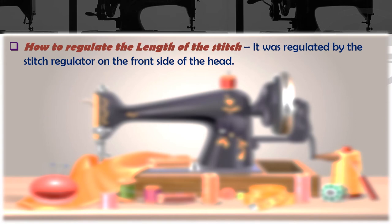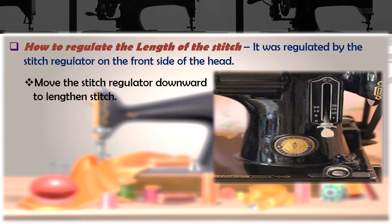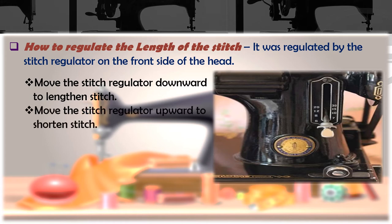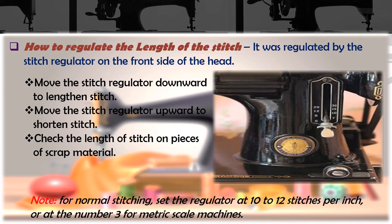How to regulate the length of the stitch: it is regulated by the stitch regulator on the front side of the head. Move the stitch regulator downward to lengthen the stitch, and upward to shorten the stitch. Check the length of stitch on pieces of scrap material. Note: for normal stitching, set the regulator at 10 to 12 stitches per inch, or at number three for metric scale machines.